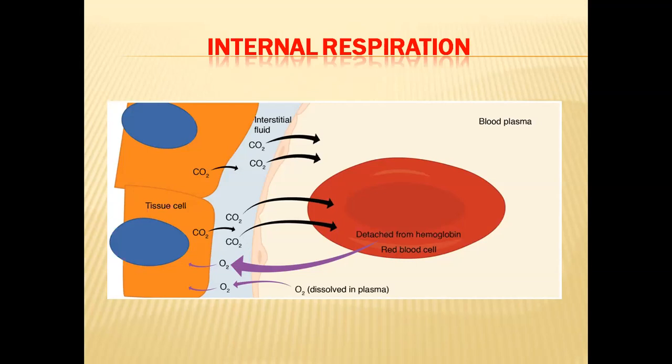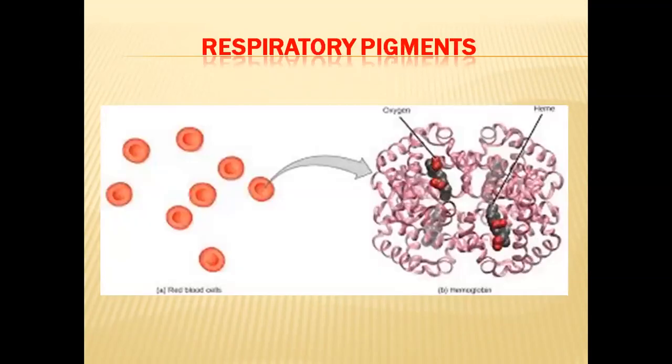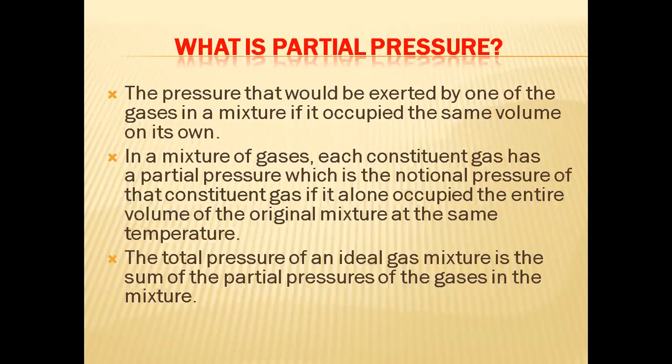How oxygen is absorbed into the blood and how it is transported to tissues — that makes the essence of our topic. For carrying oxygen, a special type of protein called hemoglobin is very helpful, and this hemoglobin is present in the red blood cells. Hemoglobin is a respiratory pigment. Some other organisms have other types of respiratory pigments like hemerythrin and chlorocruorin — different types of respiratory pigments have evolved in different animals. These respiratory pigments are very important in transporting respiratory gas, especially oxygen, from lungs to tissues.